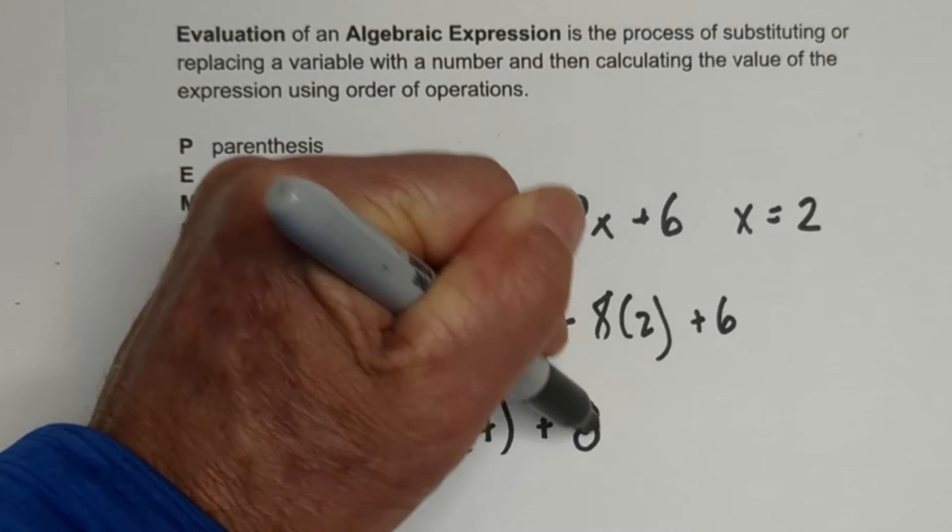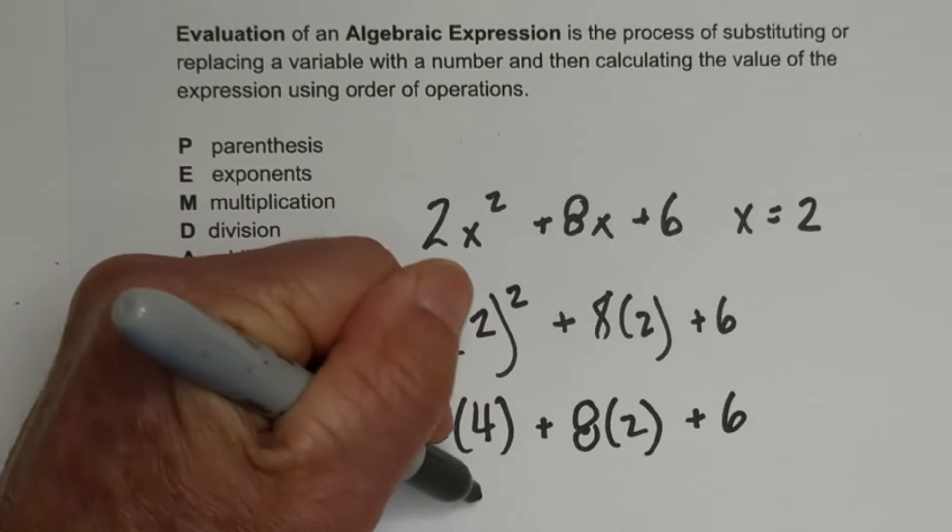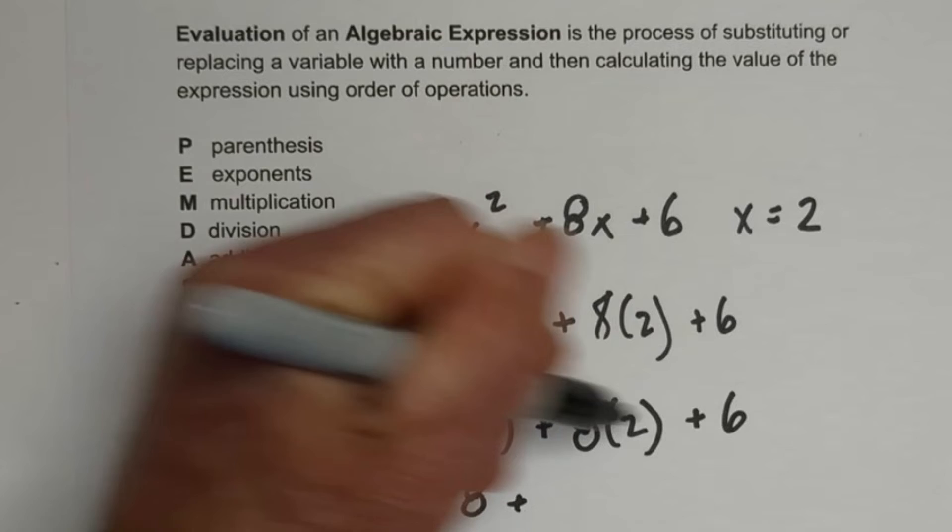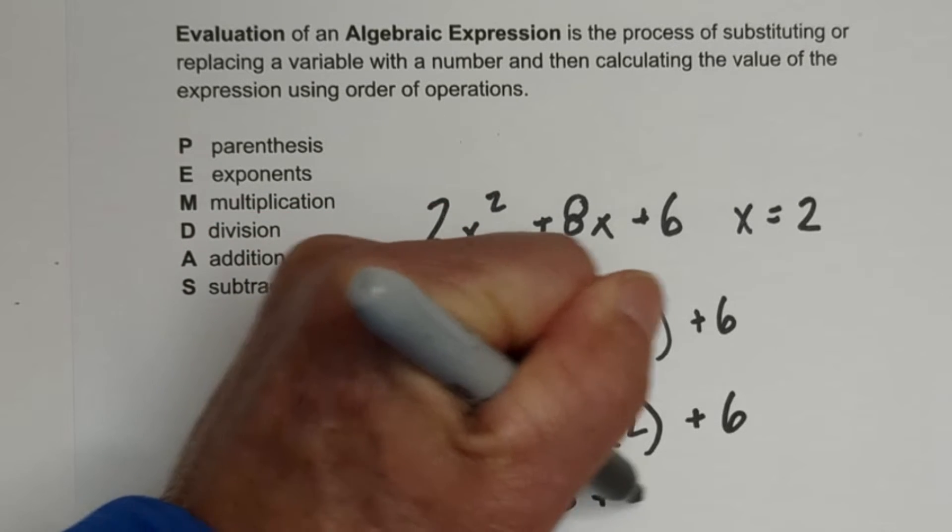And I'm just going to bring it down each time so you see what I'm doing each step. Now 2 times 4 is 8 plus 8 times 2. Remember we're working through the operations. 8 times 2 is 16 plus 6.